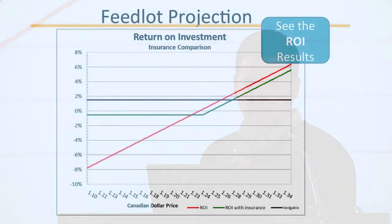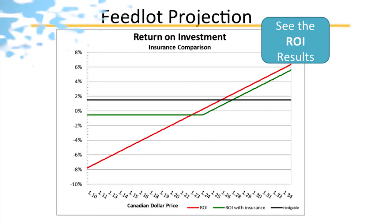If we want to get even deeper into analysis, we have a return on investment view — what we've actually invested into this. You can see as prices start to slide, there's about an 8% loss on your return to equity if we hit that worst case scenario, or an increase of up to almost 8% if we hit the jackpot price on the feeding side. With the program, we can limit our losses at a slight premium, or we have the hedge option to sort of lock in that almost 2% return on our investment.